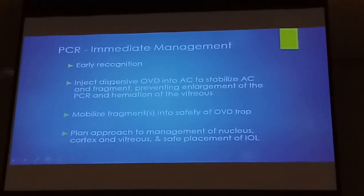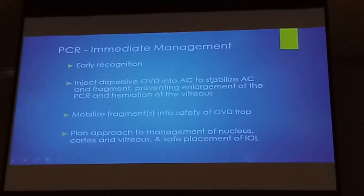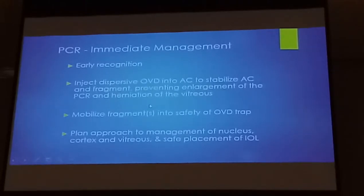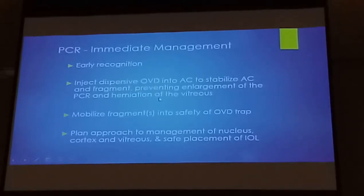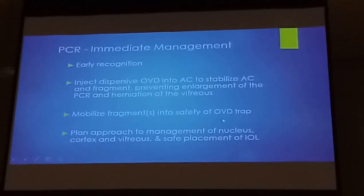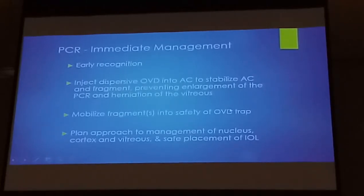The next thing to do — if you're panicking and your hands are starting to shake — you must remember: before you pull out instruments, inject dispersive OVD into the anterior chamber, something like Viscoat, to stabilize the anterior chamber and the fragment. That will prevent enlargement of the PCR and vitreous coming forwards. Then you want to move any remnant fragments into this dispersive OVD trap. It's important that it's dispersive, so that even if part of that dispersive OVD is removed by the phaco tip, the fragment doesn't fall back through the PCR — because the dispersive OVD forms a trap for the nucleus in the anterior chamber. It keeps it there so you can clear the vitreous if there's any. Then you think about and plan your approach to management of the remnant nucleus, the cortex, the vitreous, and how you can place the IOL.